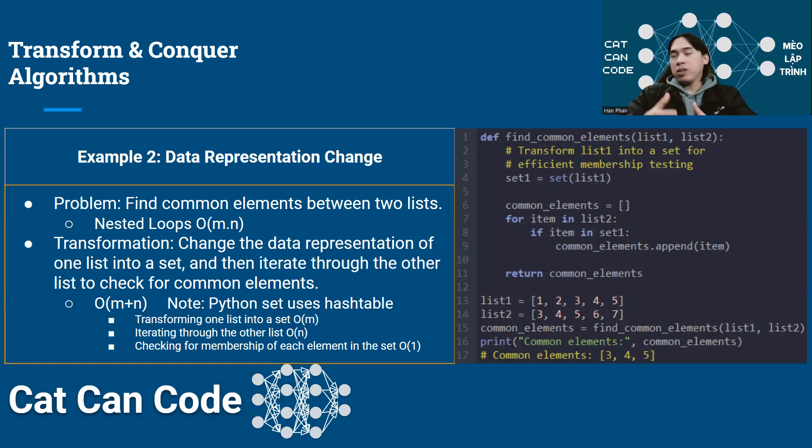So we have managed to reduce the complexity from polynomial time O(N squared) to a very much faster algorithm that only costs O(N) linear time. This is the Python code demonstrating the idea. This is converting from the list to the set, that costs O(M), and this is looping through the other list and then checking if the item is in the set or not. This 'if item in set1' here only costs O(1) in each run. Very efficient because set in Python is implemented as a hash table.